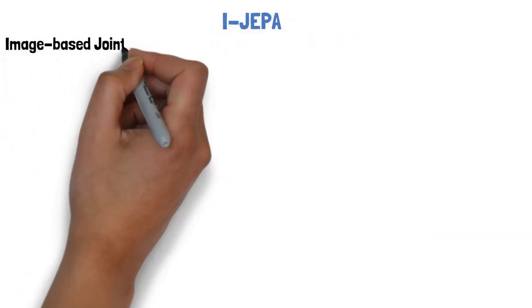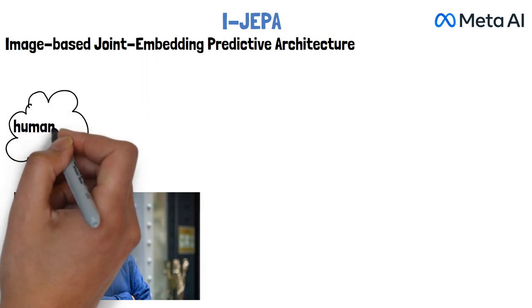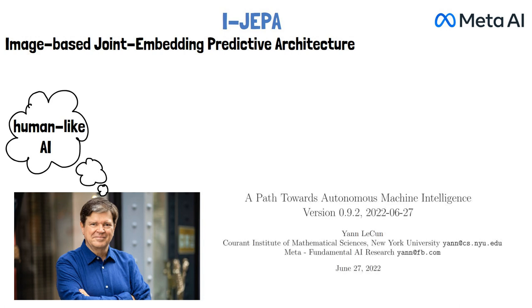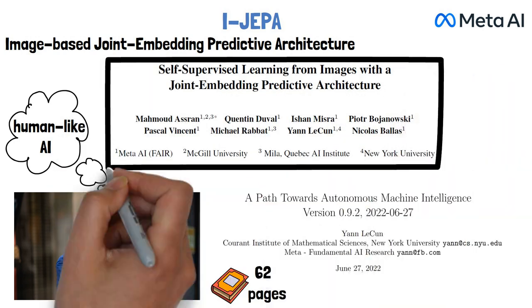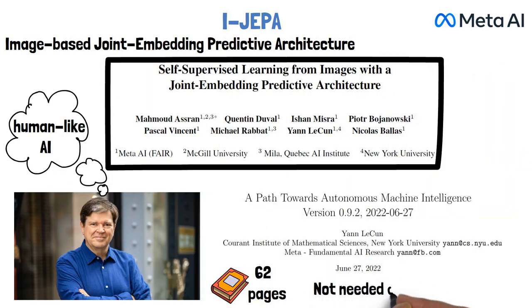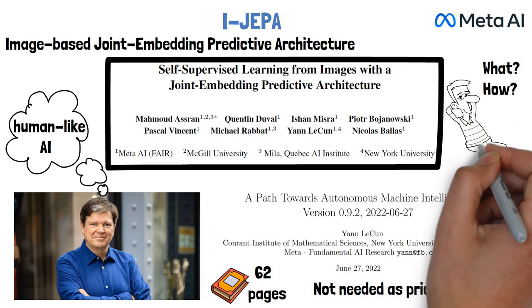Thank you for joining this ES Board video about iJEPA, Image Based Joint Embedding Predictive Architecture, a new open source computer vision model from Meta AI, and the first AI model based on Yann LeCun's vision for a more human-like AI, which was presented in a 62-page paper called 'A Path Towards Autonomous Machine Intelligence.' In this video we'll dive into the research paper that introduced iJEPA, and no prior knowledge of LeCun's vision is needed to follow along.